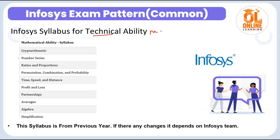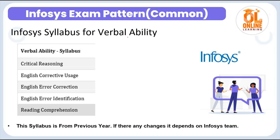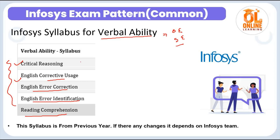For Technical Ability or Mathematical Ability, the topics include: number series, profit and loss, time speed and distance, partnerships, average, algebra, and simplification. This is the same for both Operation Executive and Systems Engineer. For Verbal Ability, the topics include: critical reasoning, English corrective uses, error correction, English error identification, and reading comprehension. The Verbal Ability section is also the same for both roles.